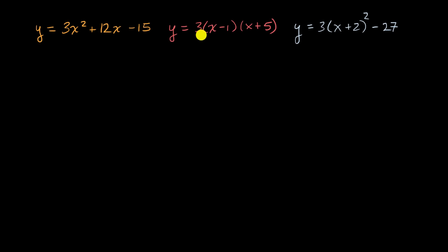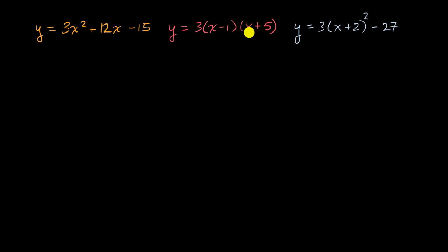It might not be obvious when you look at these three equations, but they're the exact same equation. They've just been algebraically manipulated — they are in different forms. This is the equation in sometimes called standard form for a quadratic. This is the quadratic in factored form. And this last form is what we're going to focus on in this video: this is sometimes known as vertex form.